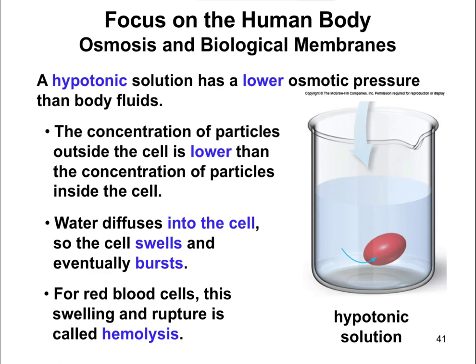In the case of this hypotonic solution, the concentration of the particles is lower outside the cell than inside. Because of that, the water out here wants to rush into the cell to try to dilute what's inside the cell, trying to make it so that the concentrations are the same outside and inside the cell.